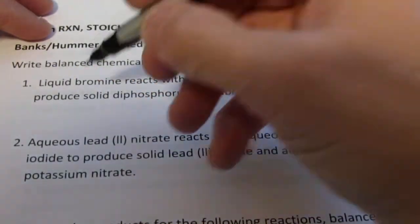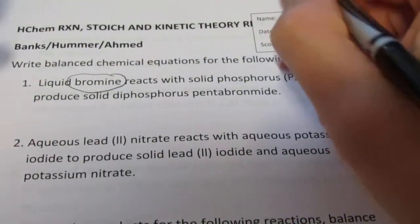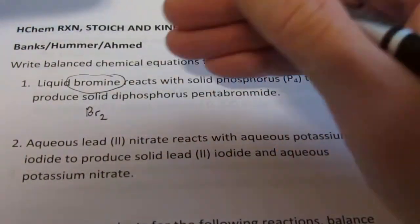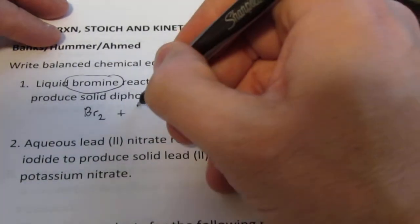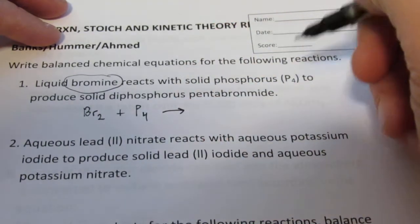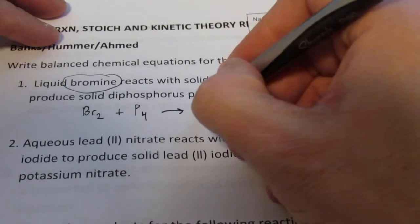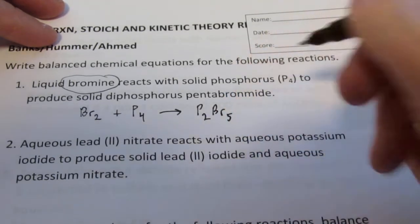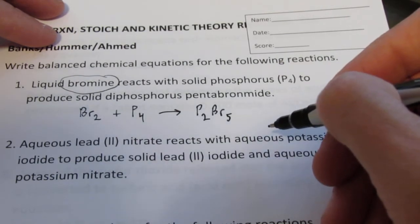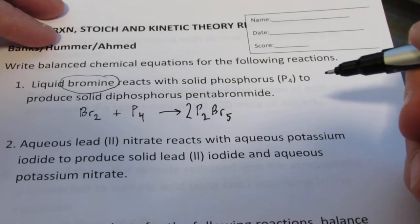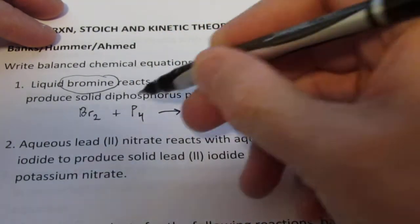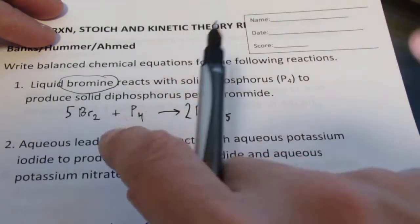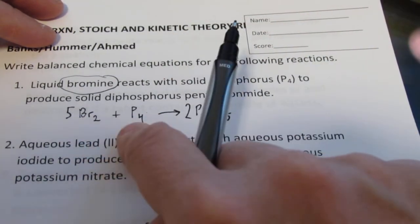Question number one says liquid bromine reacts with solid phosphorus to produce solid diphosphorus pentabromide. Bromine is one of your Brinclehoff elements, meaning it's diatomic, so write it as Br2. Solid phosphorus is P4. Diphosphorus pentabromide is P2Br5. Balancing this: 5Br2 + P4 → 2P2Br5. This is a synthesis reaction where two elements combine to form a compound.